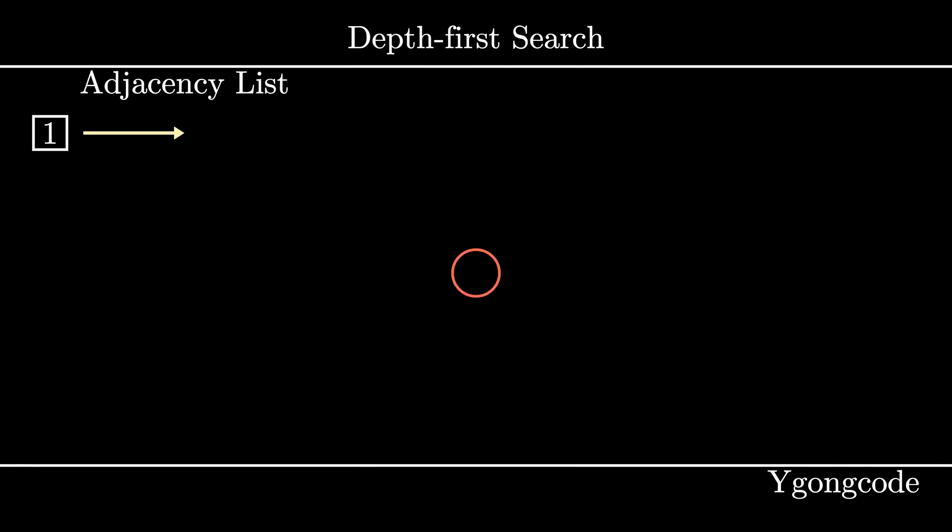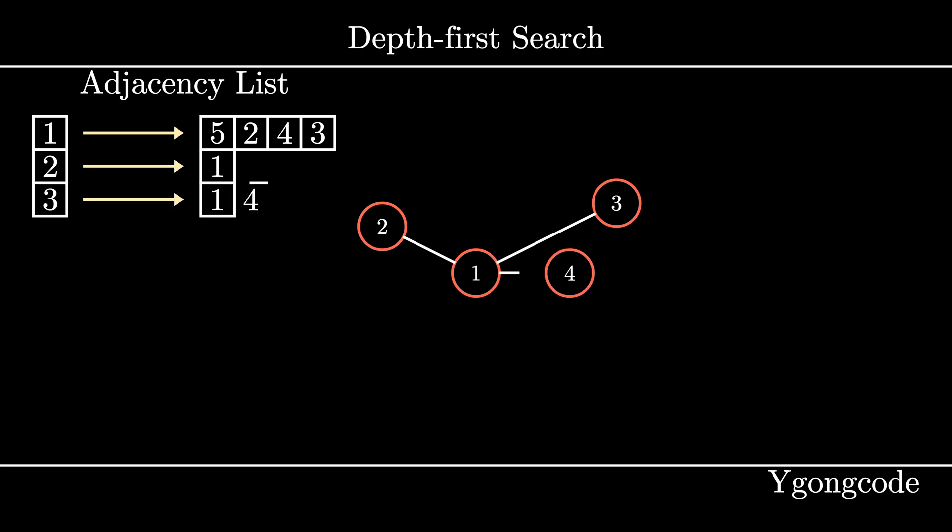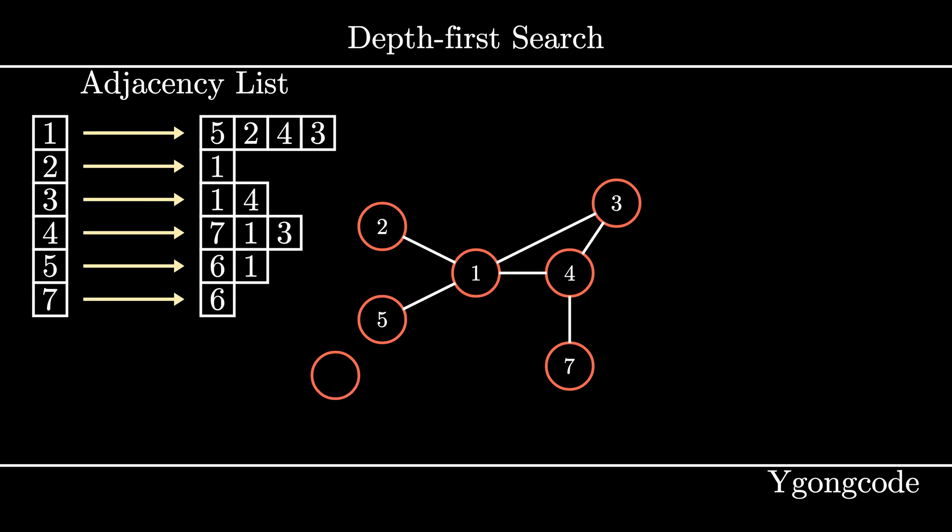In our case, the edges are undirected, meaning that a node can travel back and forth via an edge. One way to represent the graph is using an adjacency list. An adjacency list is a mapping of nodes to its connected neighbors. You can implement this as a map with the key being a node and the value being a list of nodes that are connected.